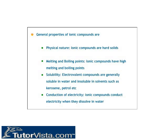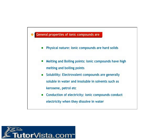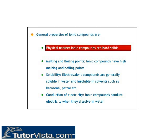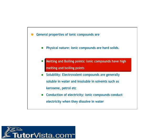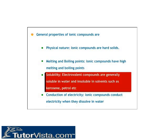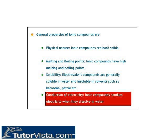Properties of ionic compounds: Ionic compounds are a combination of positively charged ions (cations) and negatively charged ions (anions). They are hard solids with high melting and boiling points. Electrovalent compounds are generally soluble in water and insoluble in solvents such as kerosene and petrol. Ionic compounds also conduct electricity when they dissolve in water.